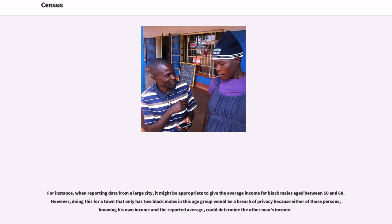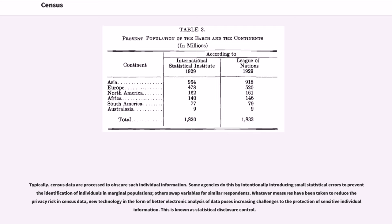For instance, when reporting data from a large city, it might be appropriate to give the average income for black males aged between 50 and 60. However, doing this for a town that only has two black males in this age group would be a breach of privacy, because either of those persons, knowing his own income and the reported average, could determine the other man's income. Typically, census data are processed to obscure such individual information.